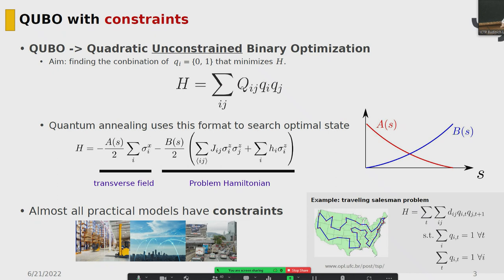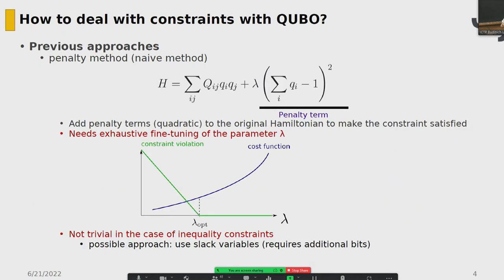In the TSP example, the cost function is the total distance. But there is a constraint — namely, the one-hot constraint, two types. A previous approach to dealing with this constraint in the QUBO model is the naive penalty method: adding penalty terms consisting of the square of the constraint with a coefficient lambda. This adds penalty terms to the original Hamiltonian to make the constraint satisfied — if the solution violates the constraint, the penalty term increases the cost function.